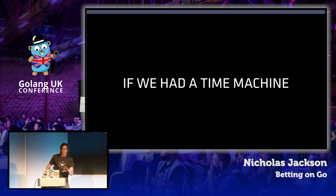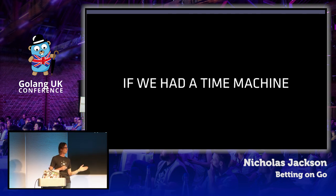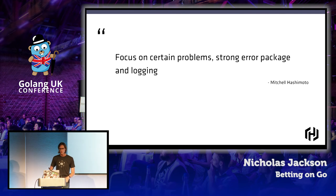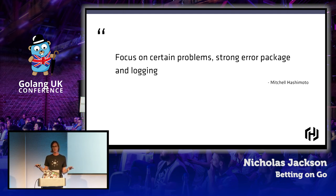If we had a time machine and could send ourselves back to 2013 and give ourselves advice on what we'd have done differently — Mitchell's core advice is about focusing on certain problems: the error packages and logging. We had too many different implementations; we didn't settle on a standard.